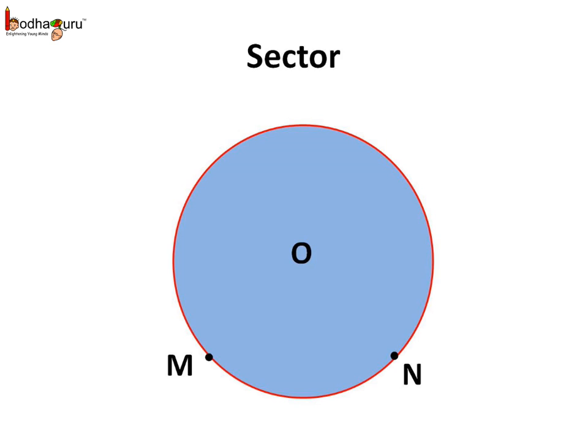Here we have a circle with the center as point O. Now we name the two end points of an arc MN. Now let us join the end points of the arc with the center of the circle which is point O. Here the line segment OM and ON are the radii of the circle.